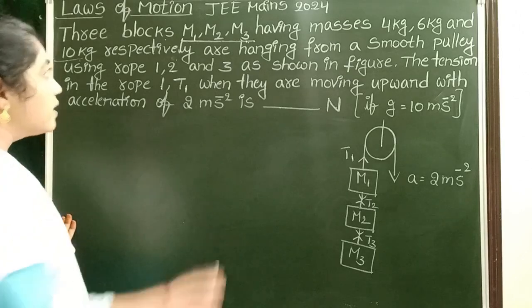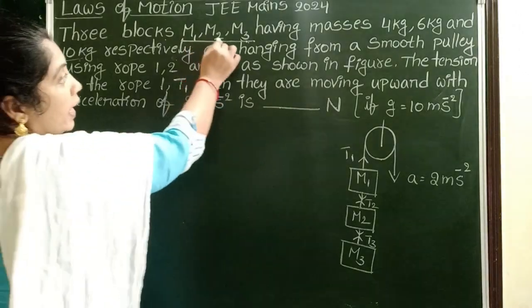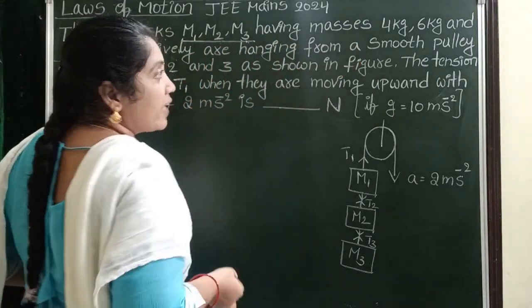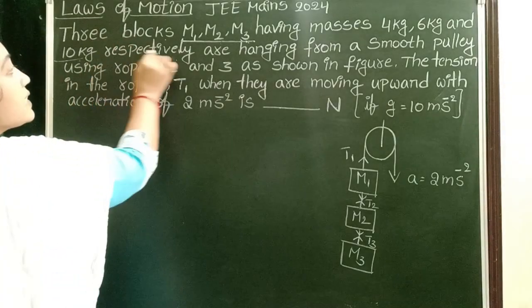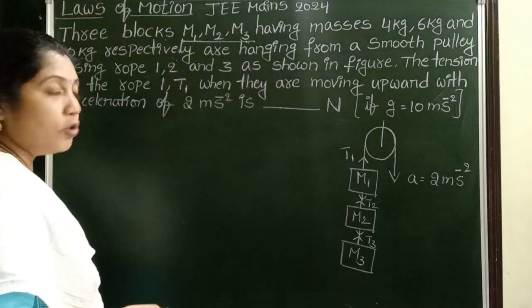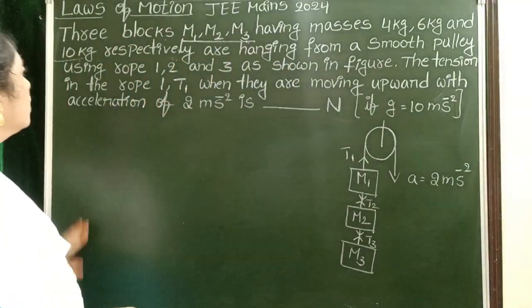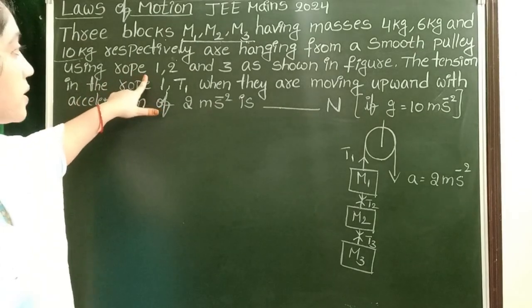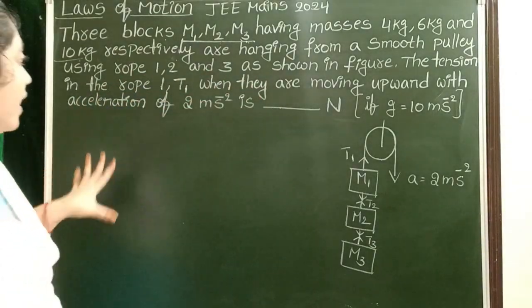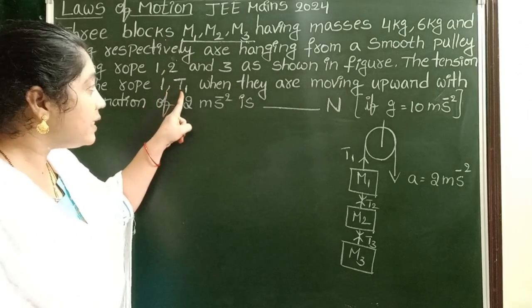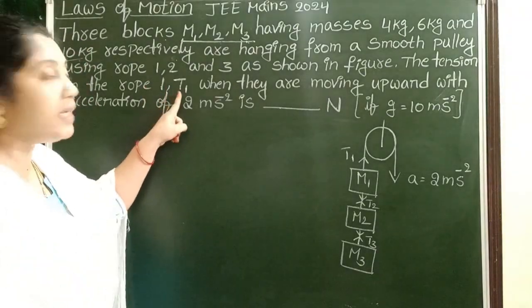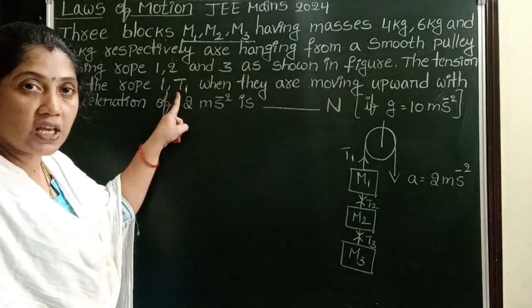3 blocks M1, M2, and M3 having masses 4 kg, 6 kg, and 10 kg respectively are hanging from a smooth pulley using 3 different ropes as shown in the figure. The tension in rope 1 is T1. Here we have to find out the value of the tensional force T1.